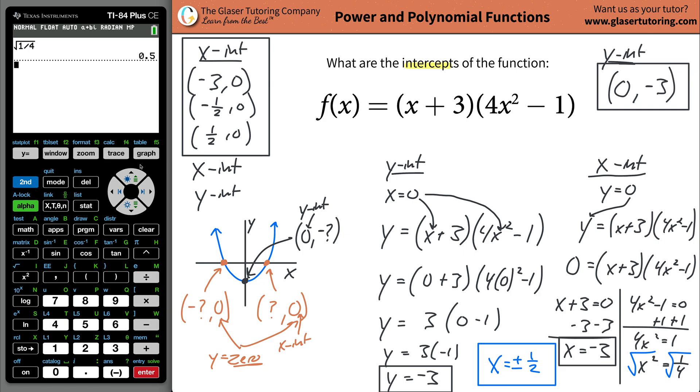But if you wanted to check yourself by using the calculator, it's fine. Or if you wanted to just use the calculator at the start, that's also fine too, if you're allowed. But what you can do is you plug it in. Parenthesis now, we're going to do (x + 3), close the parenthesis, then open the parenthesis. It's going to be 4x² - 1. Close the parenthesis. Hit graph.